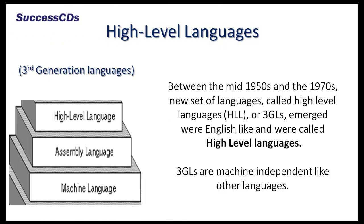The third is high-level languages, which are also known as third generation languages. Between the mid-1950s and the 1970s, a new set of languages called high-level languages or third generation languages emerged. They were English-like, because what took several lines of code in machine or assembly language could be written using a single instruction in a third generation language, and this greatly enhanced the programming process. Third generation languages are machine-independent and must be converted into machine language before execution by a program called compiler.